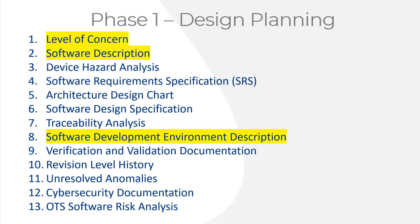The first phase of design is planning. The three documents you should prepare during the planning phase are the level of concern document, the software description, and the software development environment description. That last one is essentially your procedure for how you're going to accomplish software development, document it, and fulfill design controls — if you're combining both into one integrated procedure.